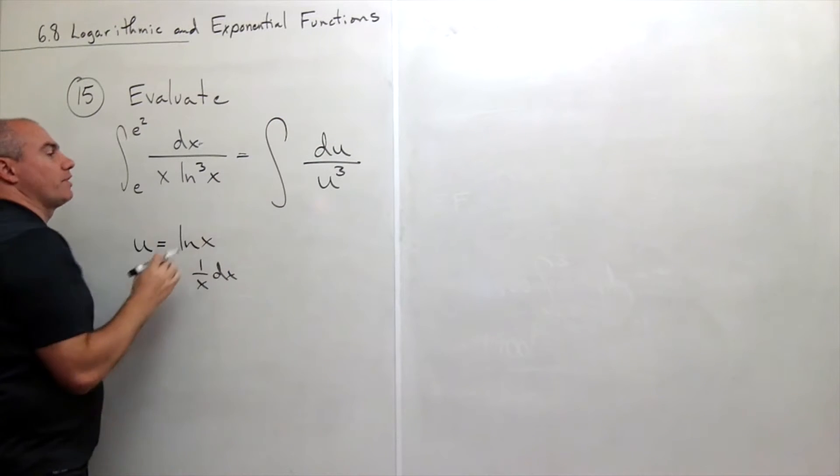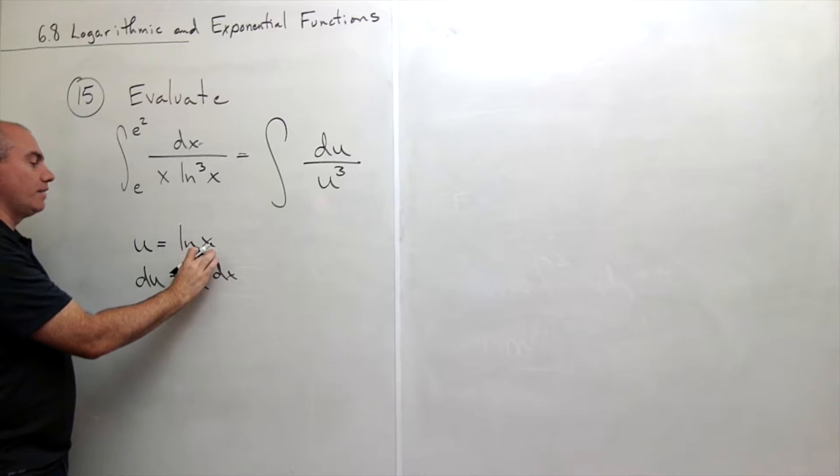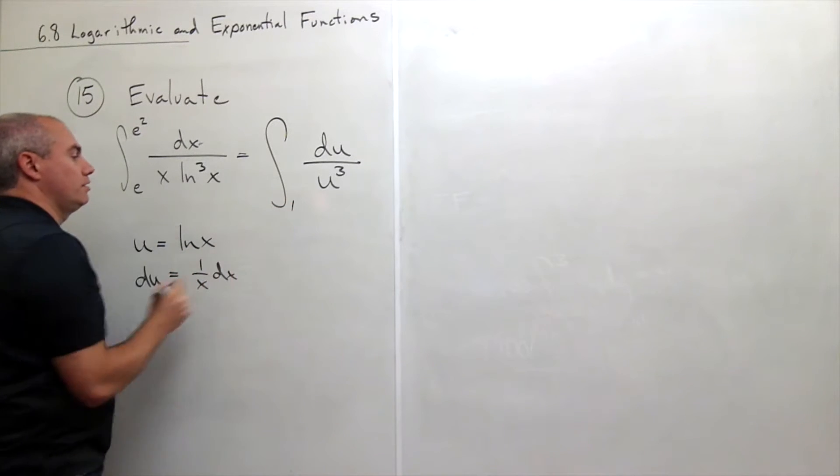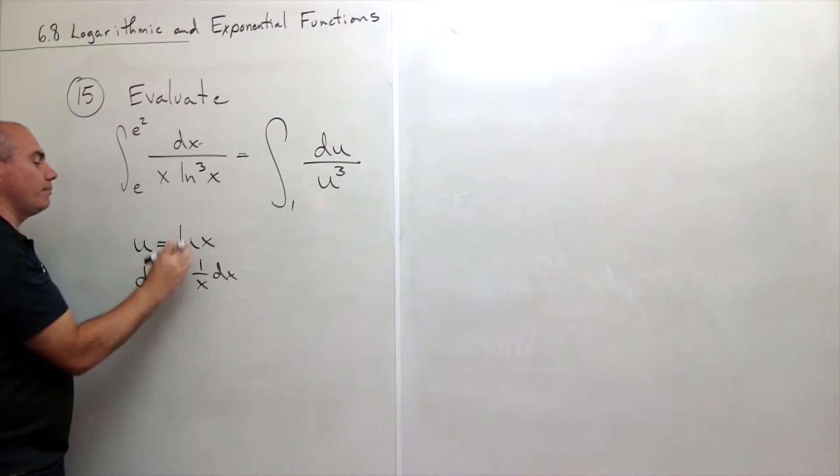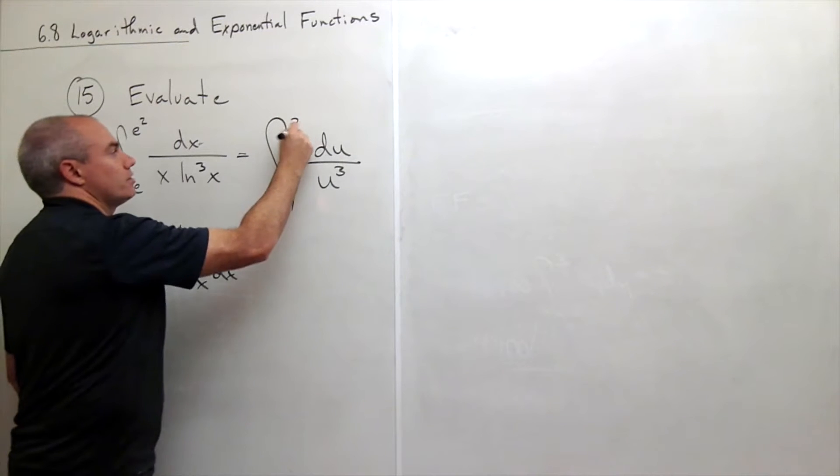I need to change my limits of integration because I changed over to u. E becomes ln of e, and ln of e is 1. And e squared becomes ln of e squared and ln of e squared is 2.